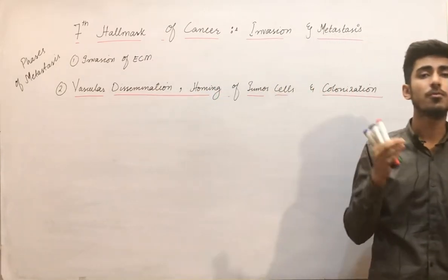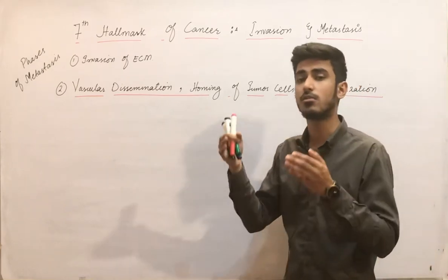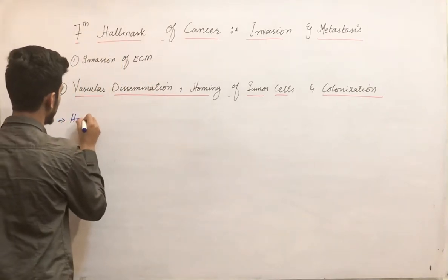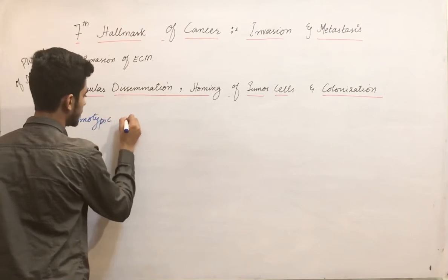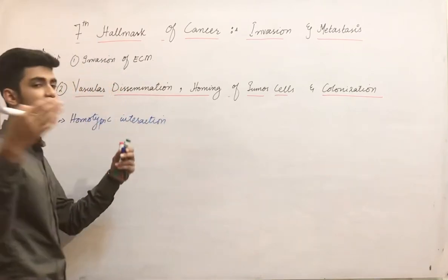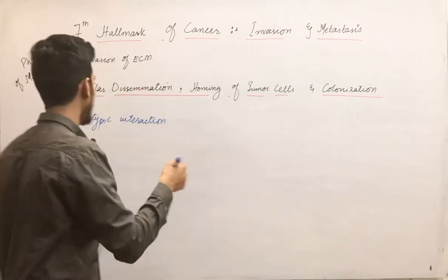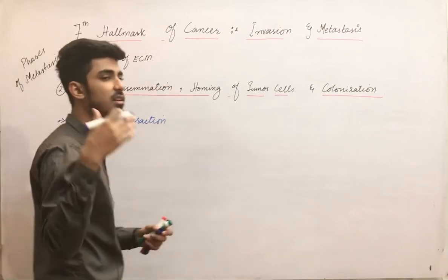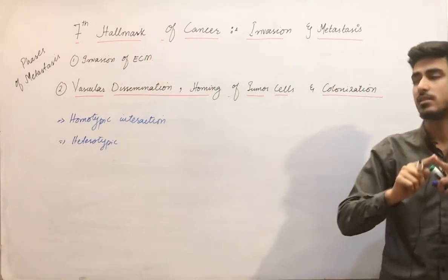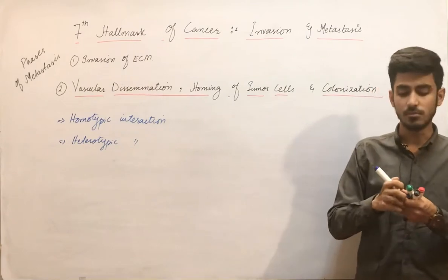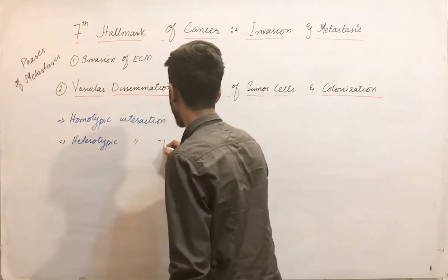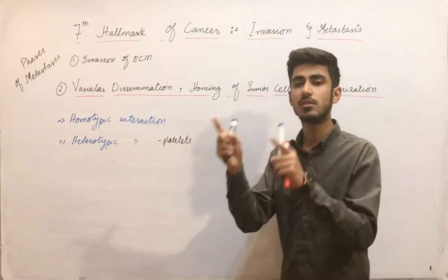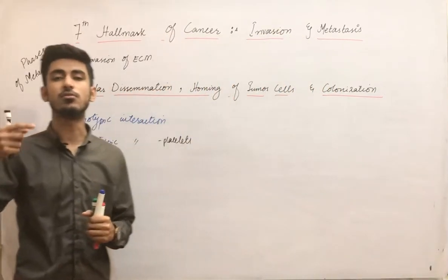In order to cope with and prevent these destructive mechanisms, the tumor cells adhere to each other — that is called homotypic interaction, meaning the tumor cells interact or join together with each other. They also interact with blood cells, which is called heterotypic interaction. The blood cells most commonly involved are the platelets, and this tumor cell-platelet interaction increases the survival of the tumor cells.